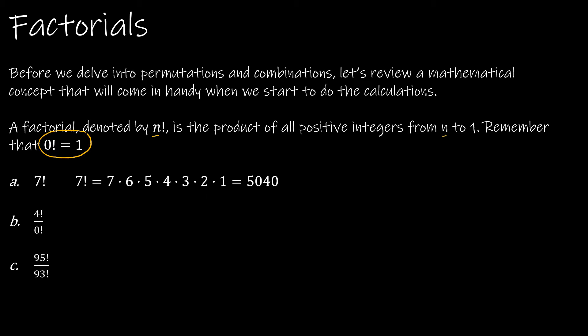For example, seven factorial means seven times six times five times four times three times two times one. For four factorial over zero factorial: zero factorial is just one, so it's really just four factorial — four times three times two times one — which is 24.